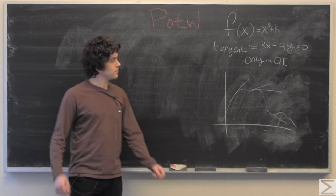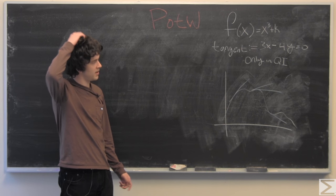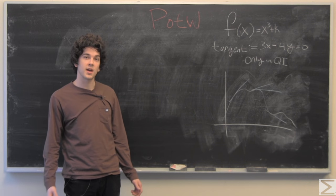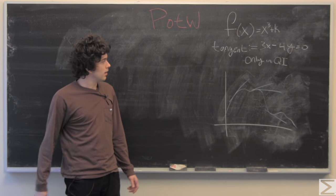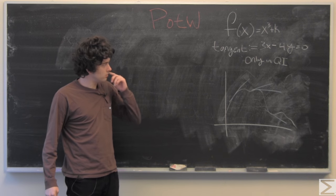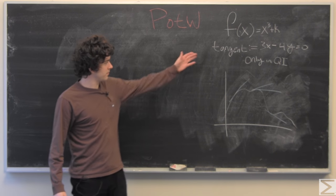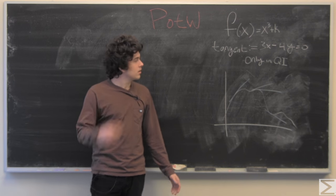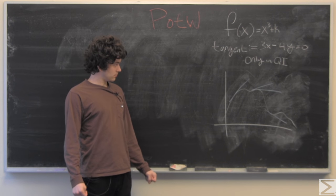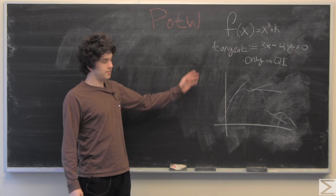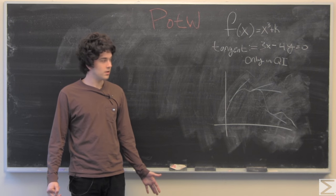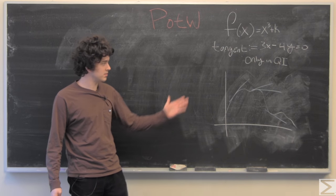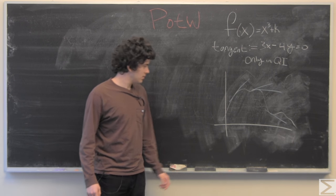We're given a function f(x) = x³ + k and we have to solve for k, which would be impossible, but fortunately we're also given an equation of the tangent line at any point in the graph as long as it's in quadrant one.